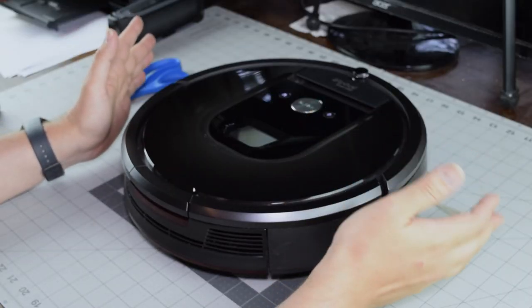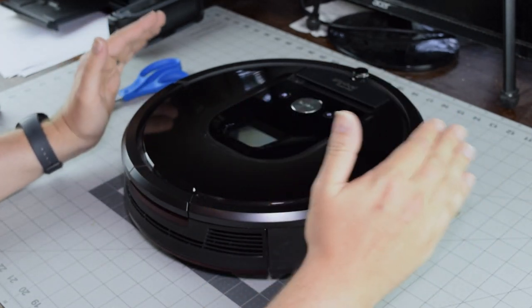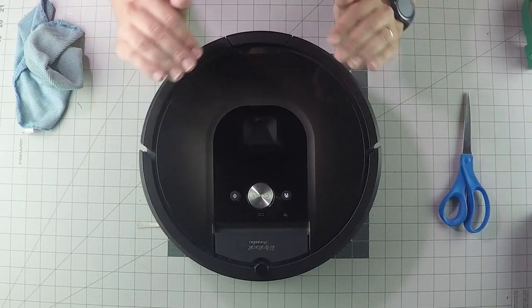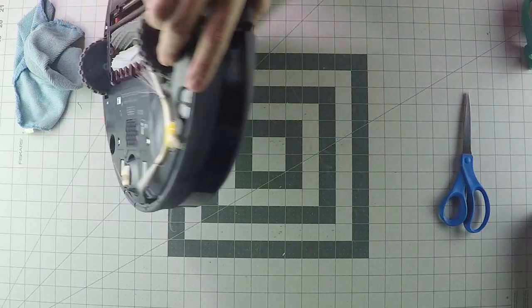In order to fix this, we're going to essentially disable those sensors. And you do not want to do this if you do have a staircase or something that the Roomba could fall off or that the only reason it's not falling off is because of these sensors.